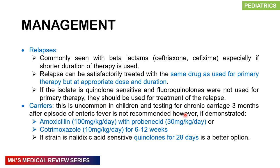If chronic carriage is demonstrated, give amoxicillin 100 mg/kg/day with probenecid 30 mg/kg/day, or cotrimoxazole 10 mg/kg/day for 6 to 12 weeks. If the strain is nalidixic acid sensitive, give quinolones for 28 days — this is actually the better option.